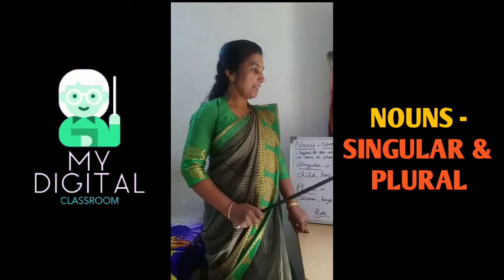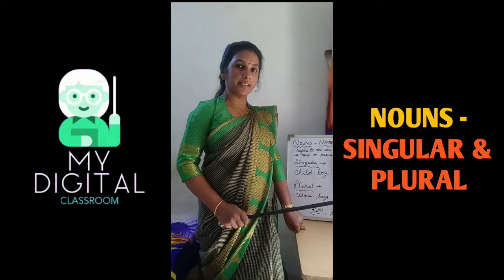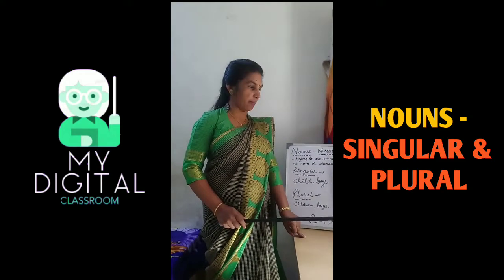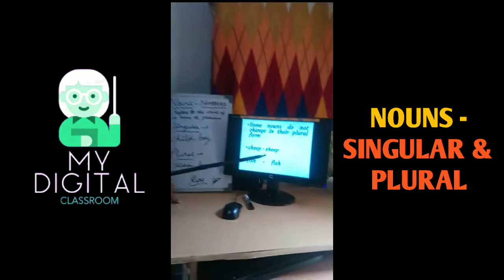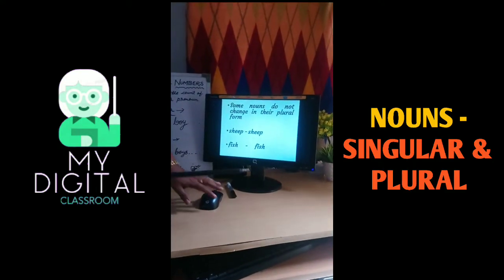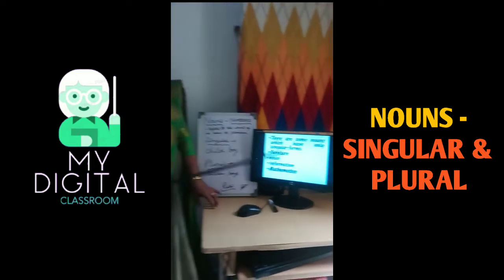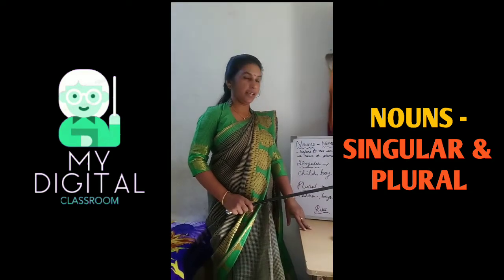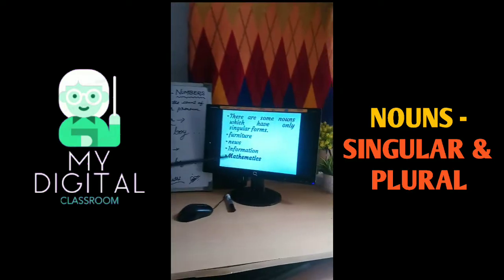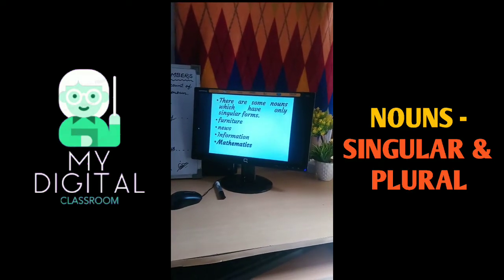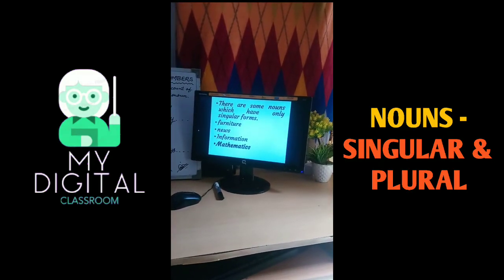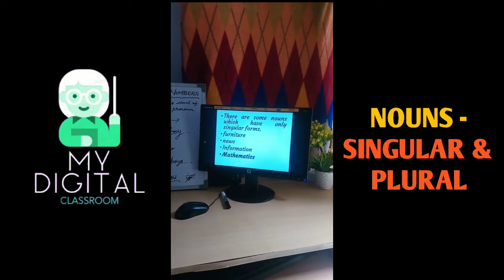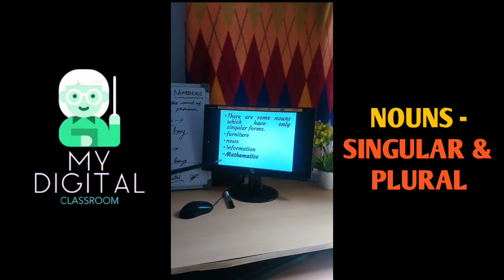Next, some nouns do not change in their plural form — singular and plural will be the same — like sheep, fish, deer, etc. And lastly, there are some nouns which have only singular forms, like furniture, news, information, mathematics, etc. From this, news and mathematics appear to look like plural nouns, but we always use them in singular form.